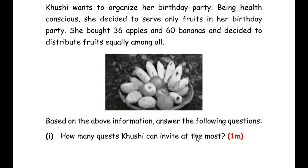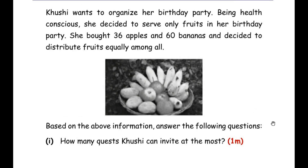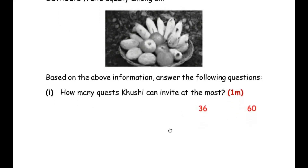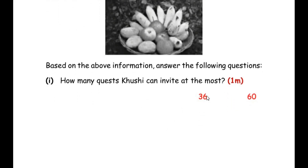Since the question asks for the greatest number of guests, we need to find the HCF of 36 and 60 using the prime factorization method. Let us start with 36. In prime factorization we use only prime numbers like 2, 3, 5, 7 and so on. Starting with 3: 3 times 12 is 36.